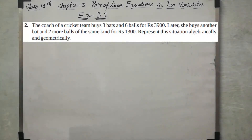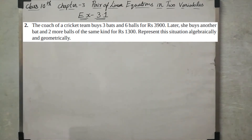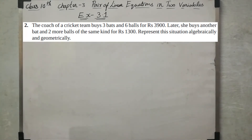Hi students, we will discuss the topic of pair of linear equations in two variables, exercise number 3.1. The coach of a cricket team buys three bats and six balls for rupees 3,900. Later, she buys another bat and two more balls of the same kind for rupees 1,300. Represent this situation algebraically and geometrically.